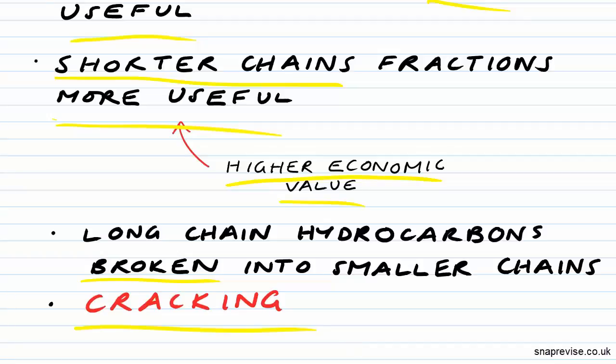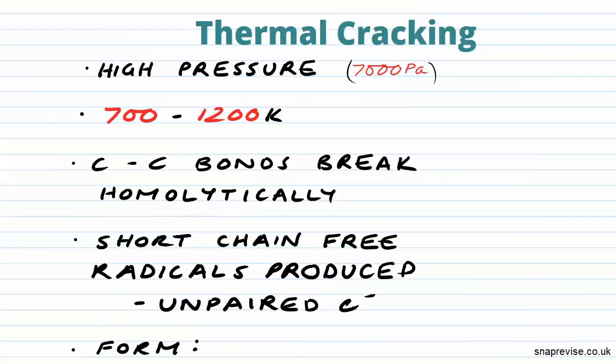Well thermal cracking is just as the name sounds, it uses heat to break down the molecules. We use a high pressure of around 7000 Pa and a temperature of between 700 and 1200 degrees Kelvin. In this process the carbon to carbon bonds are broken homolytically and what that means is that one electron from the two electrons in our covalent bond will go to each of the species we produce. We produce two short chain free radicals.